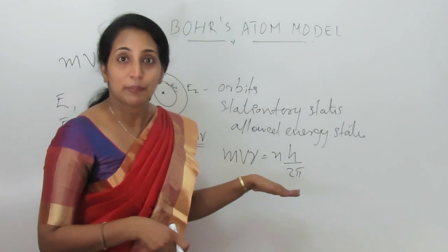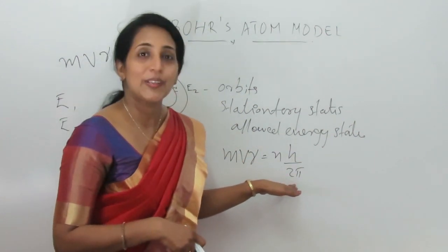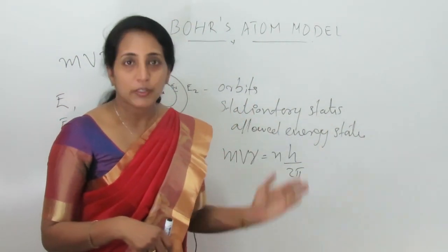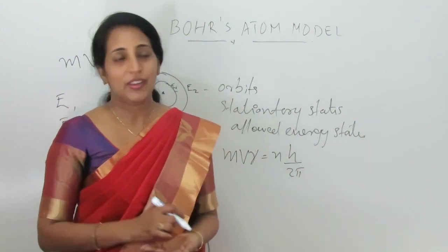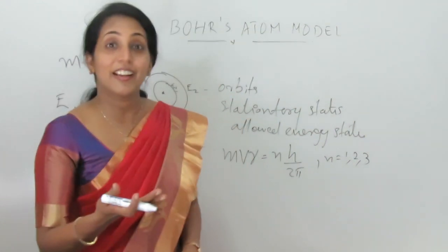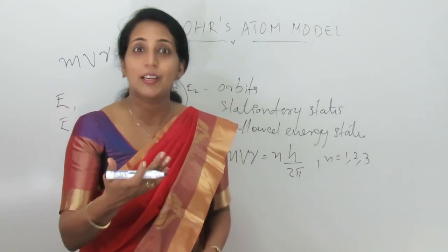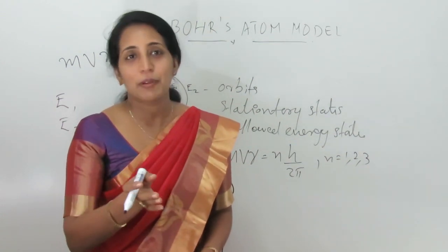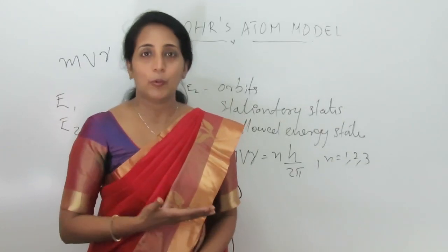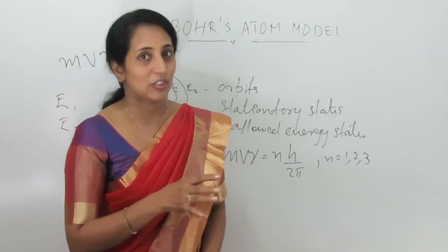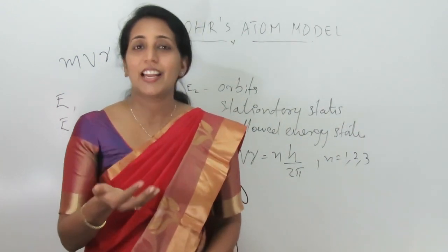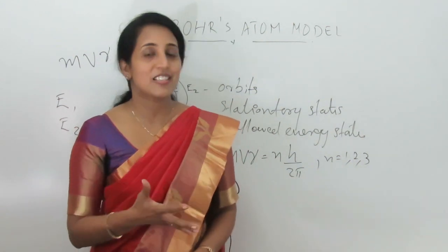The electron possesses angular momentum equal to integral multiples of h/2π. So the four postulates of Bohr's atom model are: one — fixed orbits; two — energy does not change with time; three — frequency of emitted or absorbed radiation; and four — angular momentum. Now we can see the Bohr model for the hydrogen atom.